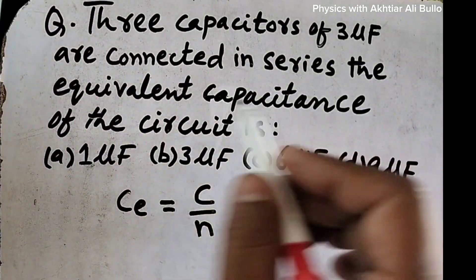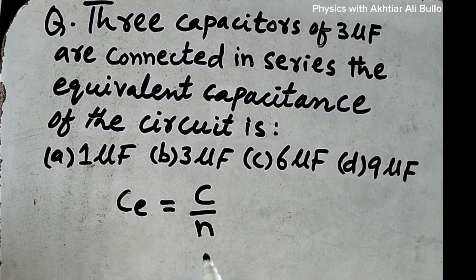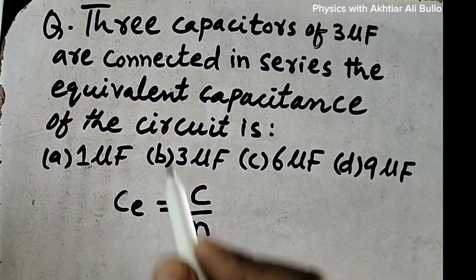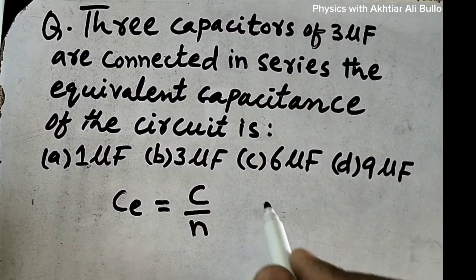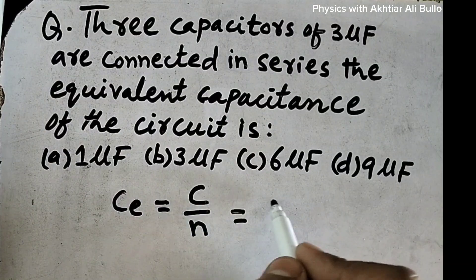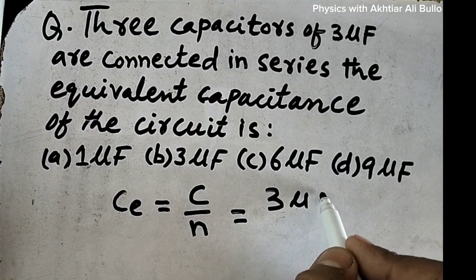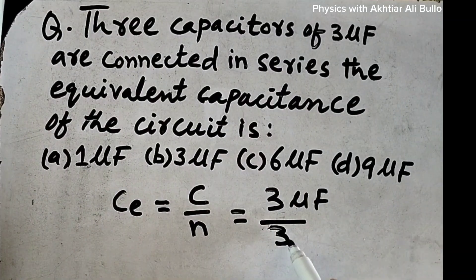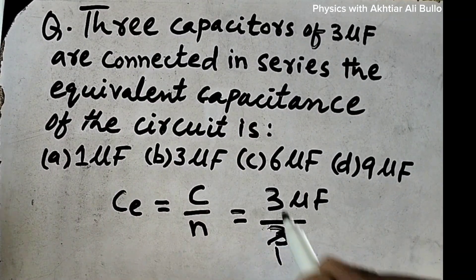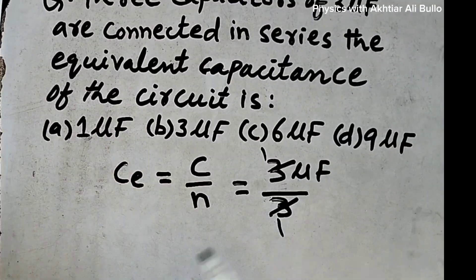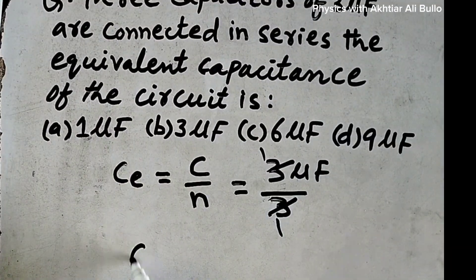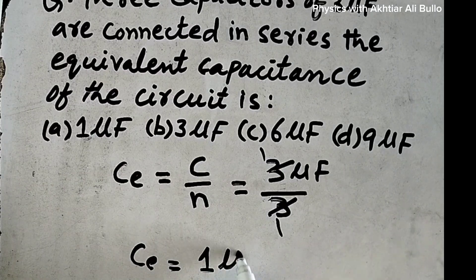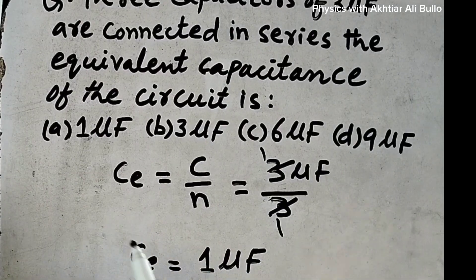There are three capacitors, so the number of capacitors n is three. The value of C is three microfarads and the number of capacitors is three. Three divided by three equals one, so the equivalent capacitance is equal to one microfarad.